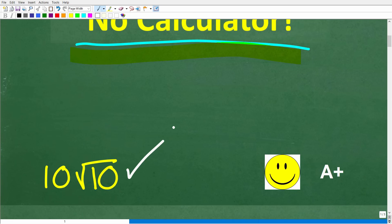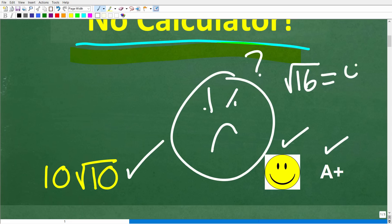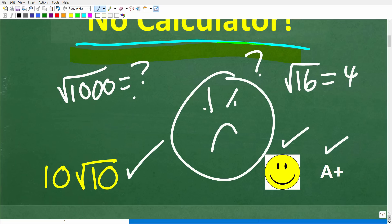If you got this, you're definitely going to get a happy face and an A plus. And if you're thinking: I know what a square root is — like the square root of 16 is 4 — but when it comes to the square root of 1,000, how could you possibly get this? Well, this is actually not that difficult. Let's get started right now.